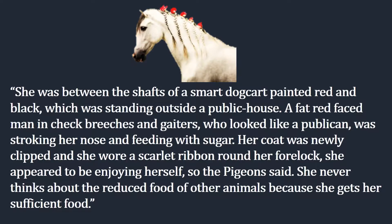Molly is greedy, dishonest, fashionable, and selfish. Here are some words describing her: 'She was between the shafts of a smart dogcart painted red and black, standing outside a public house. A fat, red-faced man in check breeches and gaiters, who looked like a publican, was stroking her nose and feeding her with sugar. Her coat was newly clipped and she wore a scarlet ribbon round her forelock. She appeared to be enjoying herself.' The pigeon said none of the animals ever mentioned Molly again — she never thinks about the reduced food of other animals because she gets sufficient food herself.